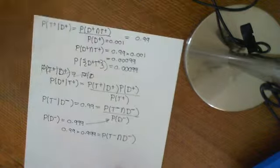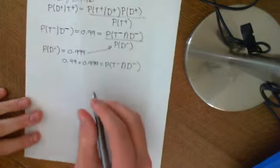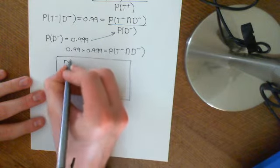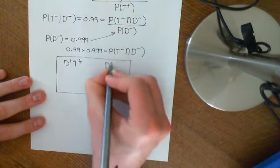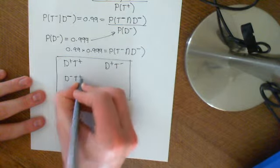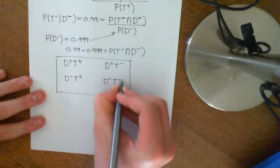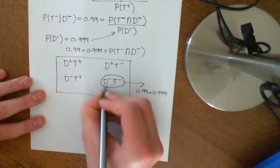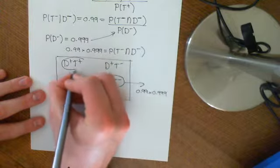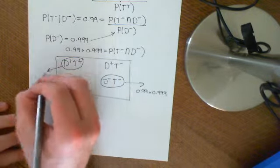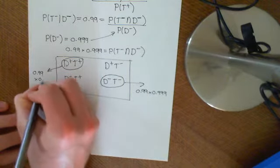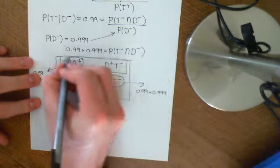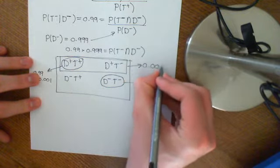Let me draw another picture. So basically, we have these four outcomes: you have the disease and test positive, you have the disease and test negative, you don't have the disease and test positive, and you don't have the disease and test negative. We know the probability of the last outcome is 0.99 times 0.999. We know the probability of having disease and testing positive is 0.99 times 0.001. We also know the probability that you are overall diseased is 0.001.